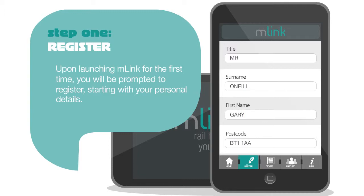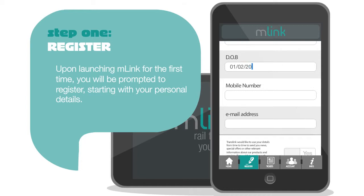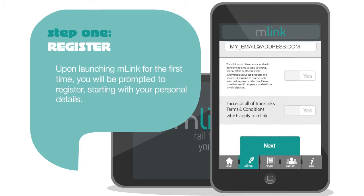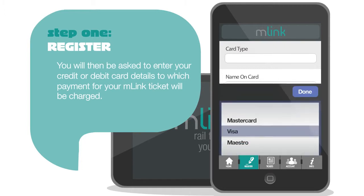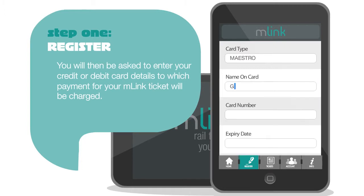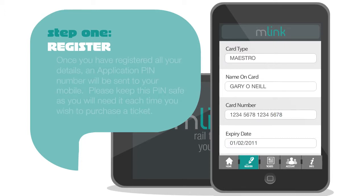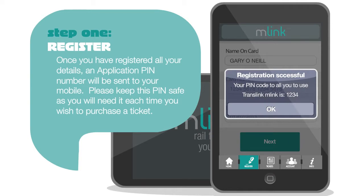Upon launching M-Link for the first time, you will be prompted to register, starting with your personal details. You will then be asked to enter your credit or debit card details, to which payment for your M-Link ticket will be charged. Once you have registered all your details, an application PIN number will be sent to your mobile.